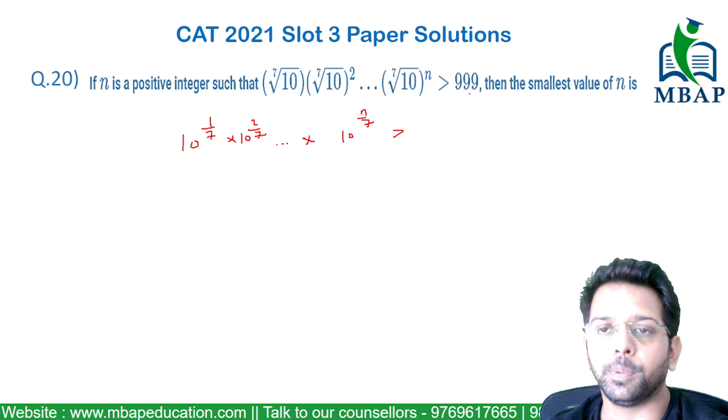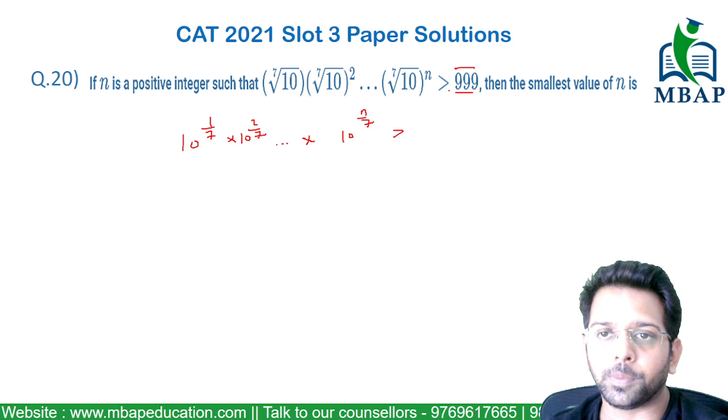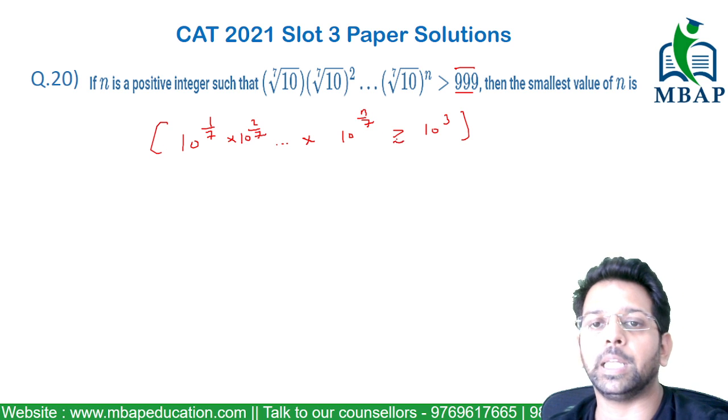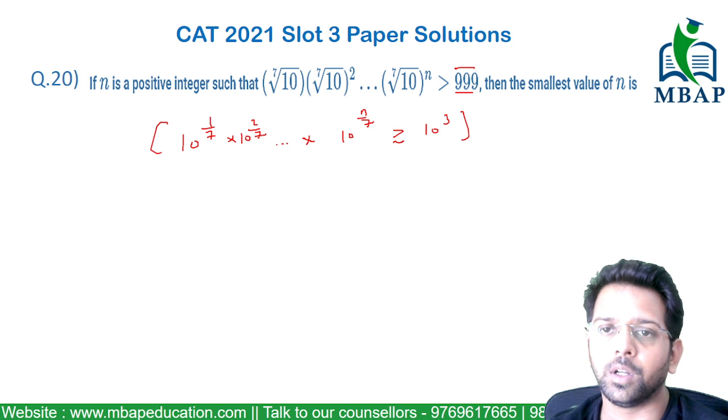They are saying this value has to be more than 999. Now 999, we can assume this value to be as close as 1000. Let me rewrite this value as 10 raised to 3. This is equivalent. Let us consider this to be equivalent because 999 is slightly closer to 1000.